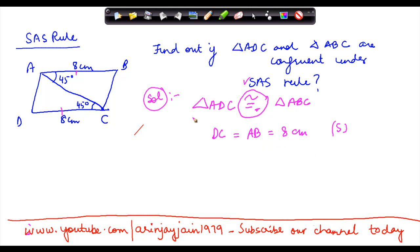Now angle, again, we know that angle DCA is equal to angle BAC is equal to 45 degree. This is the angle criteria.